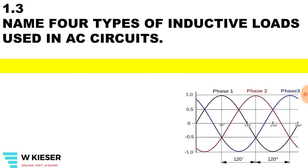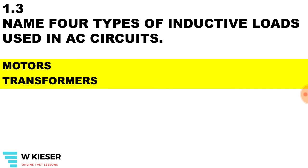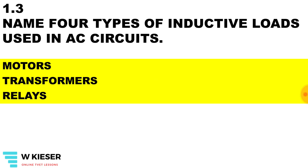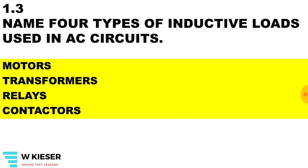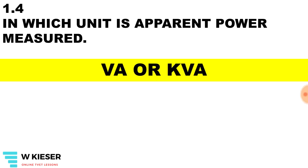Name four types of inductive loads used in AC circuits. We get motors, transformers, relays and contactors. In which units is apparent power measured? Transformers have a rating measured in volt-amps or kilovolt-amps.